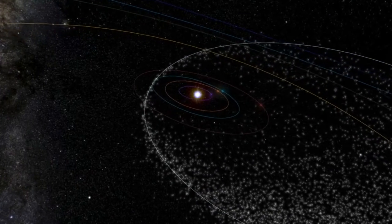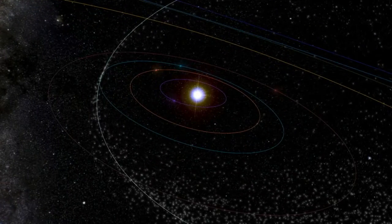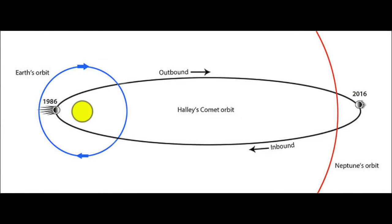Some comets' orbits are inclined to the Earth's plane, so we only catch one part of their path, while others, such as Halley's Comet, is the cause of both the Eta Aquariids and the Orionid meteor showers.